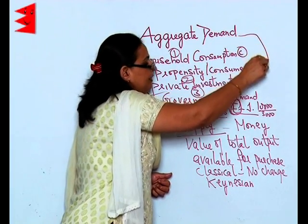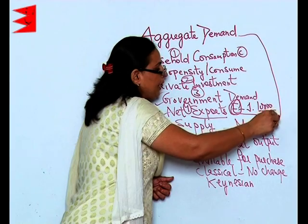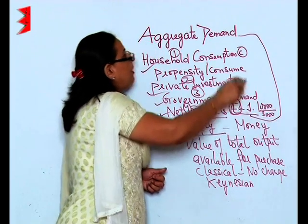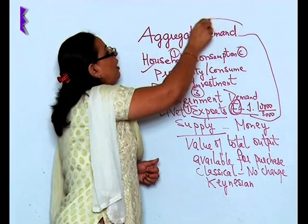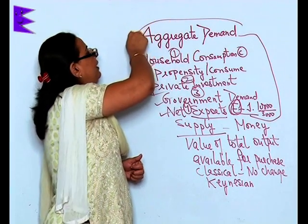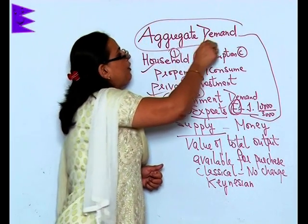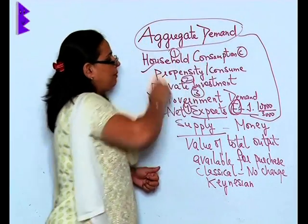All these factors — household consumption, private investment, government demand, and net export — together make up what we call the aggregate demand of an economy.